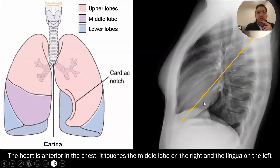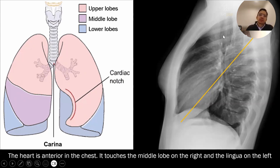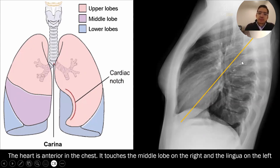Another important thing to note is that in the lungs, we call them upper lobes and lower lobes, but they're not exactly like up and down. A more appropriate name for the upper lobes might be the anterior lobes, and the lower lobes might be called the posterior lobes. You'll notice this is the major fissure — the lower lobe comes up high, more than halfway up the chest. The middle lobe touches the heart on the right, and the lingula — the part of the left upper lobe — touches the heart on the left.